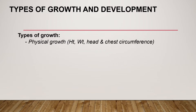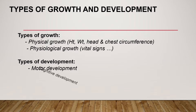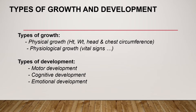Types of growth and development: physical growth includes height, weight, head and chest circumference. Physiological growth includes vital signs. Types of development include motor, cognitive, emotional, and social development. So growth includes physical and physiological growth, whereas development includes motor, cognitive, emotional, and social development.